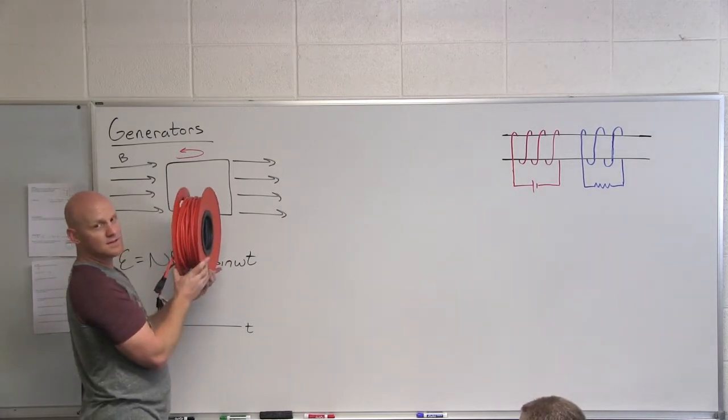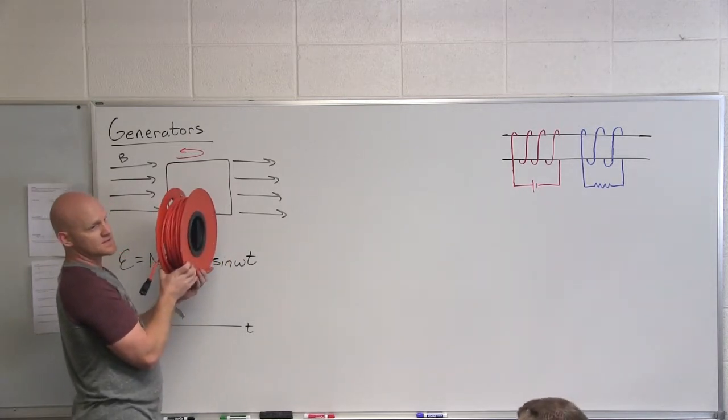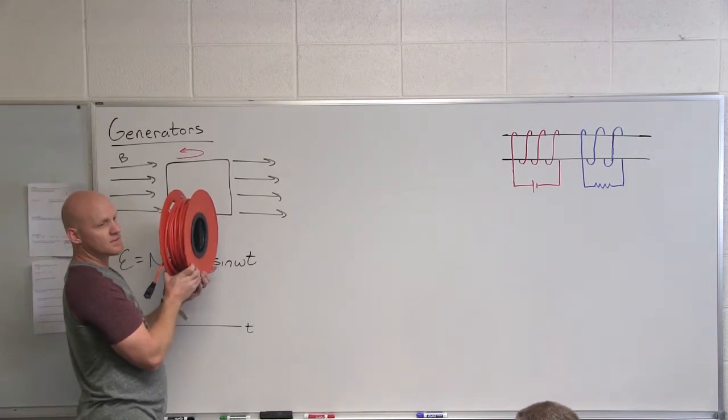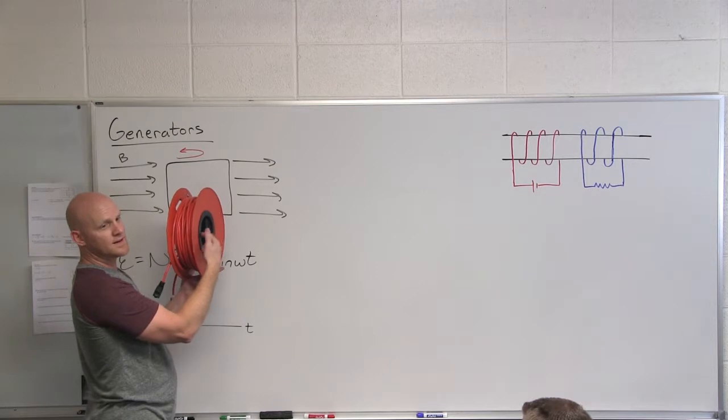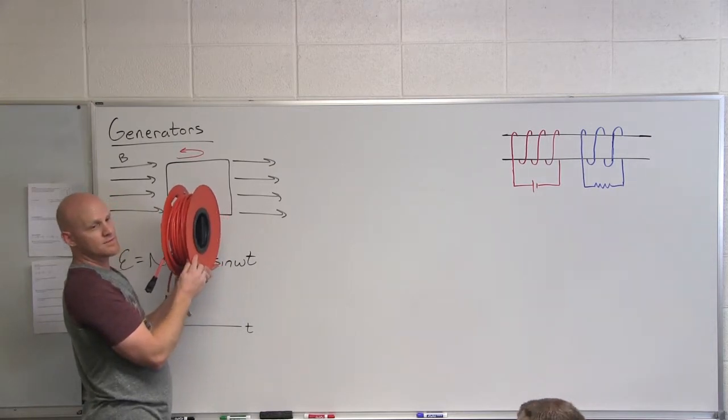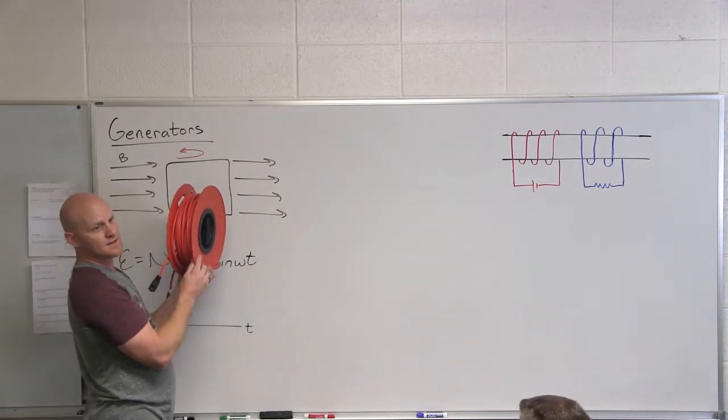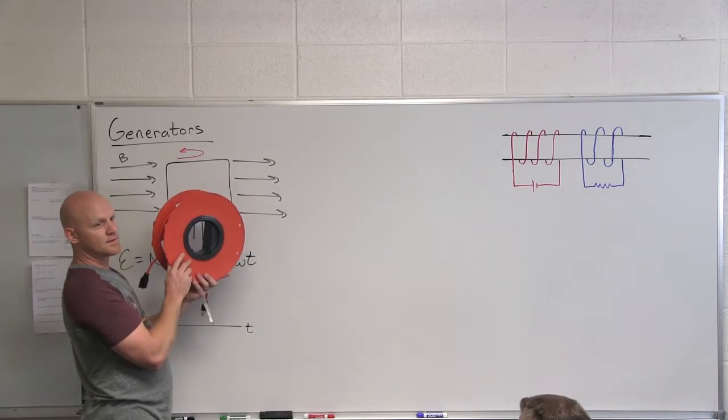So the magnetic flux the entire time after it starts is gonna be pointing to the right and is going to be increasing. And if it's increasing, then the change in magnetic flux also points which direction? To the right. Then I want to generate a current that would cause a magnetic flux that would oppose that. So which way would this current go?